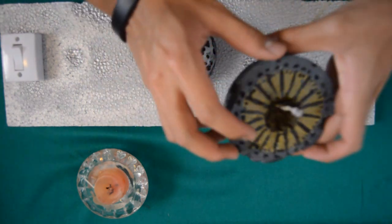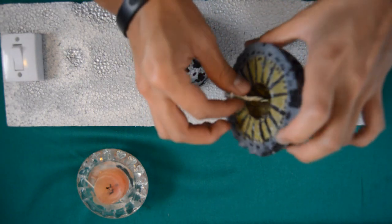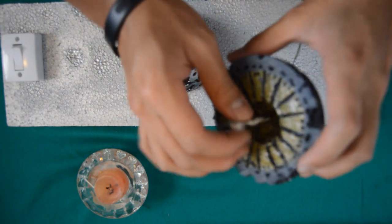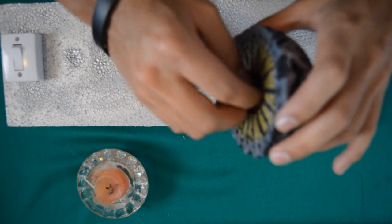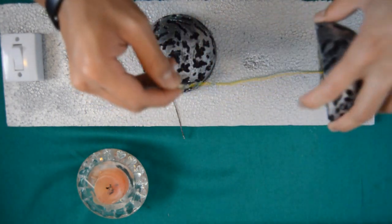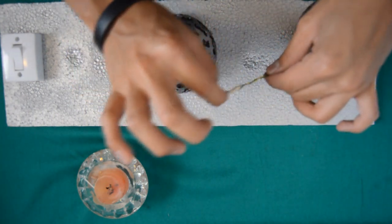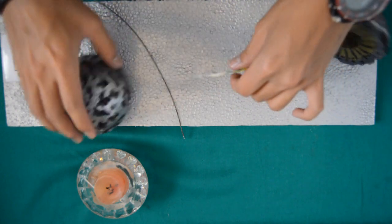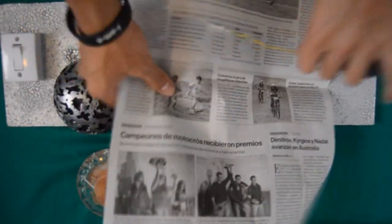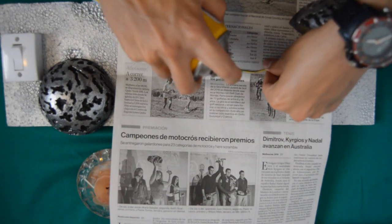Bueno, si es que vieron el video anterior del estante para soldar, este fue el foquito LED que soldé. Ahorita lo marqué porque voy a tener que pintar esto para que no se vea así como se está viendo ahorita. Entonces vamos a proteger la mesa. Un poquito de aerosol. No vayan a pintar el foquito.